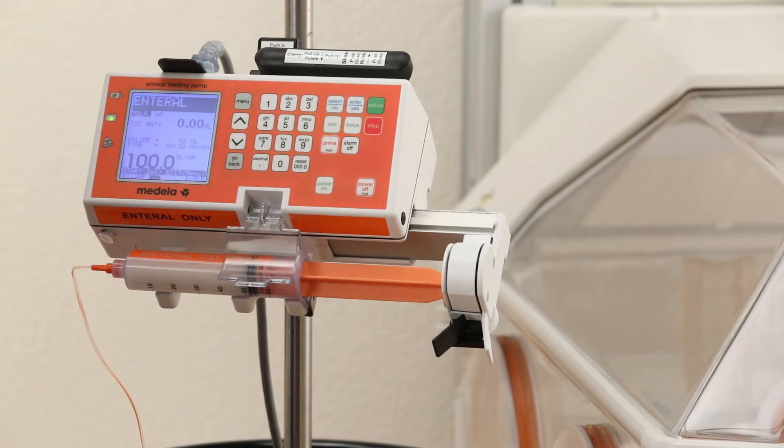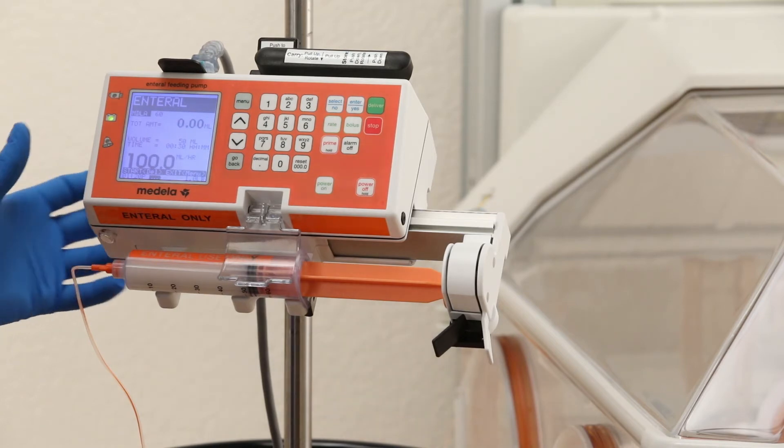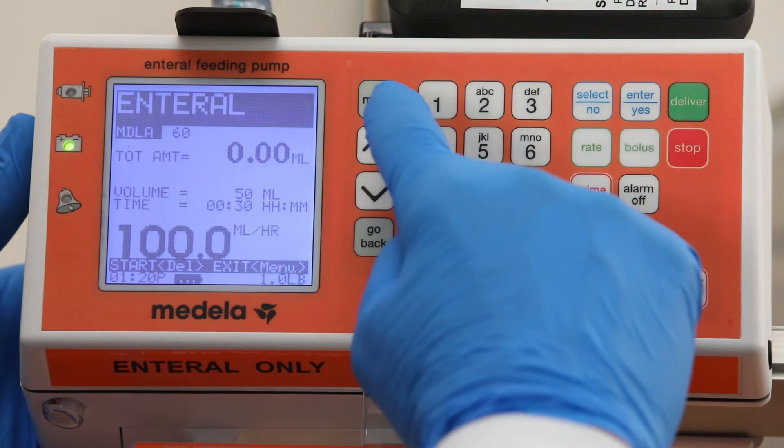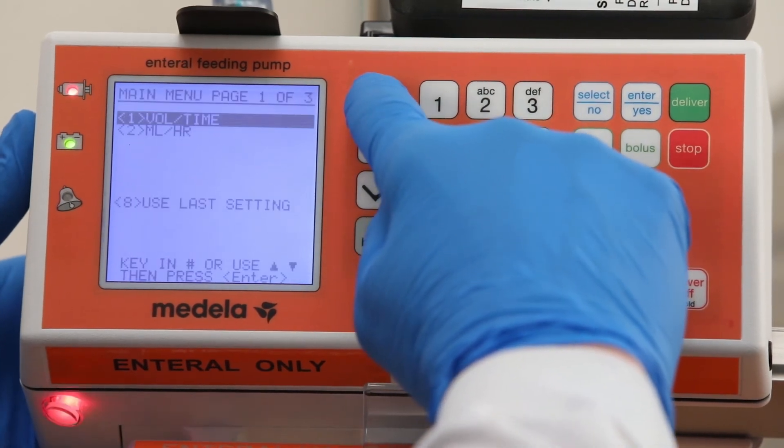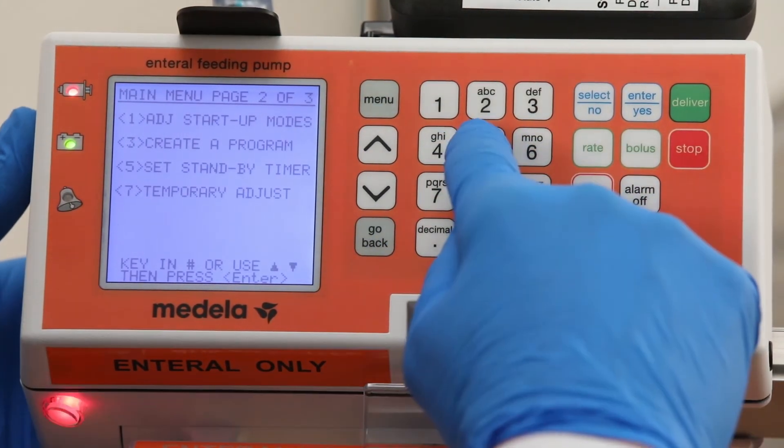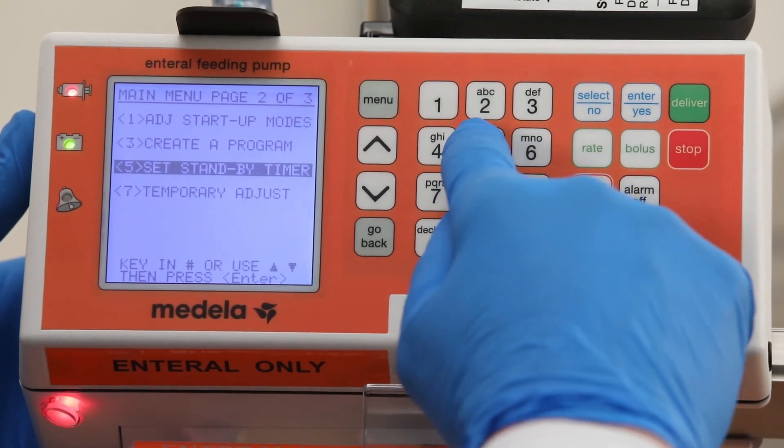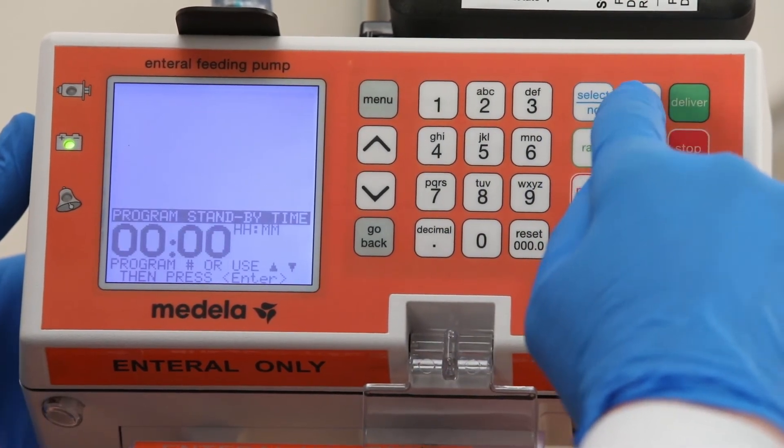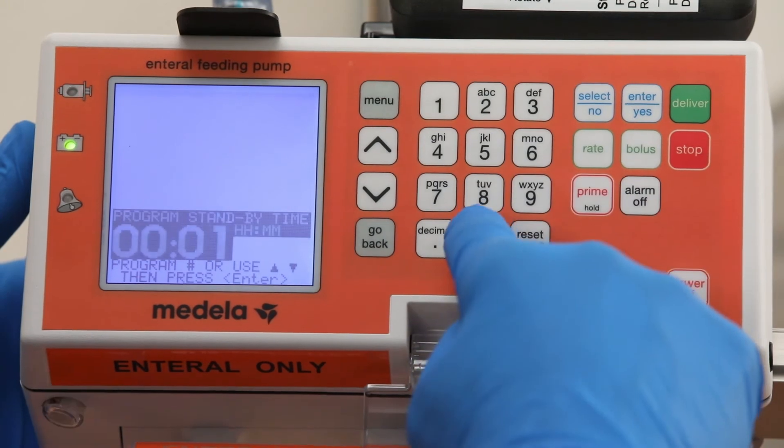The Medela Enteral Feeding Pump has a standby mode feature which allows a standby timer to be programmed with a time delay. The clinician is required to manually press start when the timer alerts. In order to set the standby timer, press the menu button twice after the feed is programmed and select option 5 to set the standby timer. Then program the desired time before you will be prompted to start the feed.